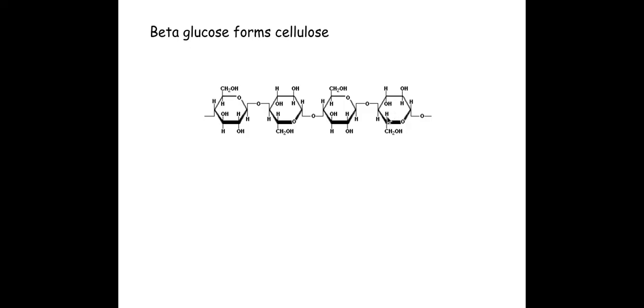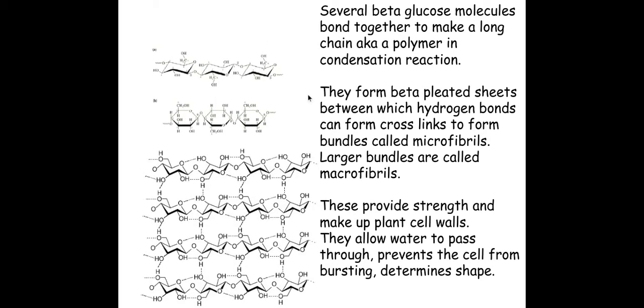I've still got a 1 to 4 glycosidic bond here but these are beta so you need to state which monomer it is, so it's a beta 1 to 4 glycosidic bond. As a result of these beta 1 to 4 glycosidic bonds I have these side chains sticking up and then sticking down and then up and then down so on and so forth.